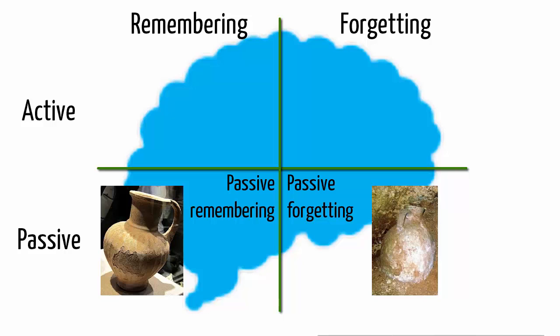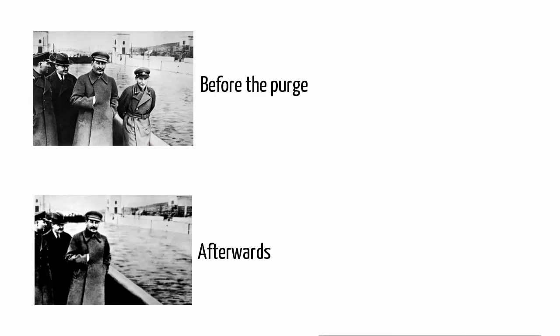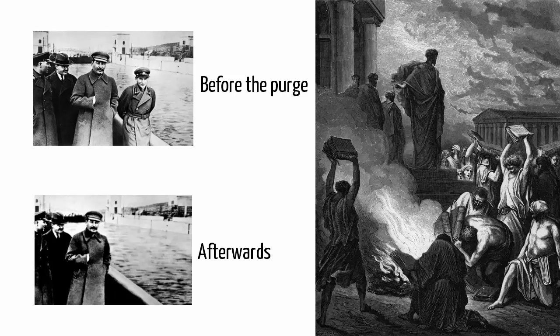Top right, we have actively forgotten. This is more interesting — these are memories that were deliberately lost. Activity went into their forgetting. Stalin, in the Soviet Union, was very good at this. His regime would deliberately remove photographic evidence of people he didn't like, or who were purged. Religions also practiced it, burning the books of heretics to actively remove their memories.